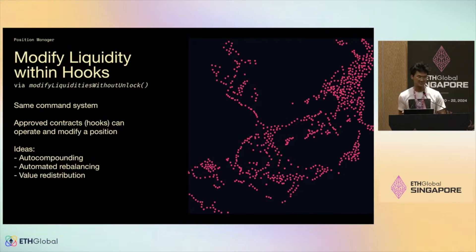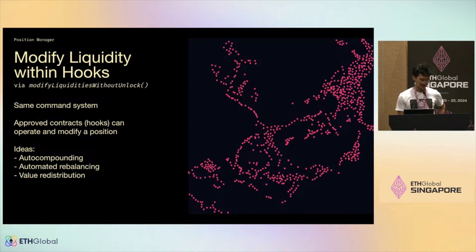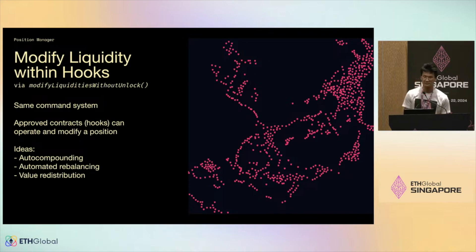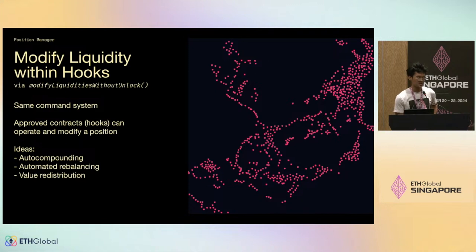Another thing that's new in position management for v4 is that we can allow other contracts to modify positions while under a lock, which is really useful for hooks. You still adhere to the same command system with the same actions and parameters. Approved contracts such as hooks can operate and modify a position while there's an active lock in place. Some ideas: inside a hook's after-swap function, every few blocks you could take somebody's fees and reinvest it back into the position itself. Hooks in before-swap could do liquidity rebalancing, concentrating a position into a tighter range. There are also ideas around value redistribution, anti-JIT penalties, and similar mechanisms.